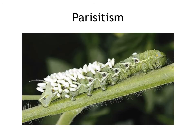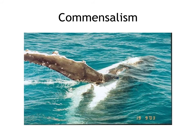Parasitism example: a caterpillar with wasp eggs on it. When the wasp eggs hatch, they eat the caterpillar to death — the wasp benefits while the caterpillar does not. Commensalism example: barnacles on the fin of a whale. The barnacles get transportation, and the whale doesn't even know they're there.